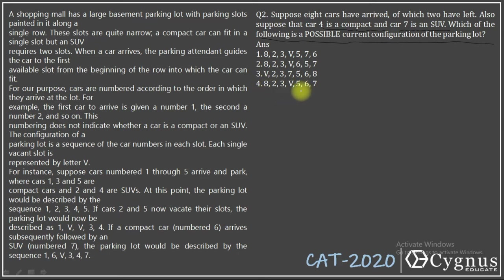The sequence 8, 2, 3, V, 5 is common among the 1st, 2nd and 4th options. Now let's talk about the 3rd option: V, 2, 3, 7, 5. Here 7 is parked between 3 and 5. This is only possible when car 4 leaves and 7 replaces that car. But that is not possible because 4 is a compact car and 7 is an SUV — so 7 cannot replace car number 4. So the 3rd option is ruled out.